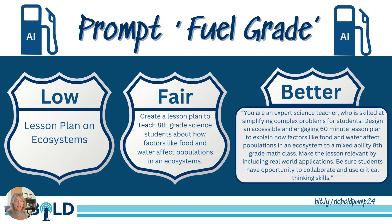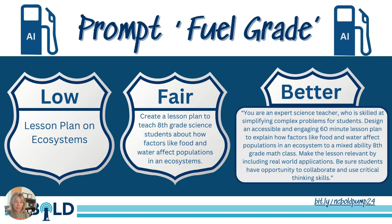Just like different grades of fuel, we have different grades of prompting. A low grade prompt would be: 'lesson plan on ecosystems.' A fair grade would be: 'create a lesson plan to teach eighth grade students about how factors like food and water affect populations and ecosystems.' And our better fuel grade — our better prompt — would be: 'You're an expert science teacher skilled at simplifying complex problems for students. Design an accessible and engaging 60-minute lesson plan to explain how factors like food and water affect populations and the ecosystem to a mixed-ability eighth grade class. Make the lesson relevant by including real-world examples. Ensure students have opportunity to collaborate and use critical thinking skills.' You can see the difference — better results require much more specific and targeted prompting.